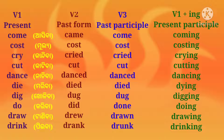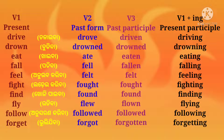Draw (taniba / aniba): second form — drew; third form — drawn; fourth form — drawing. Drink (tiba): second form — drank; third form — drunk; fourth form — drinking. Drive (chalai ba): second form — drove; third form — driven; fourth form — driving.